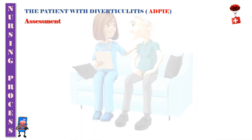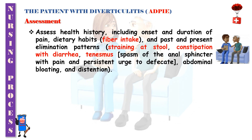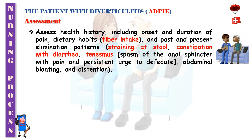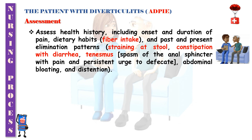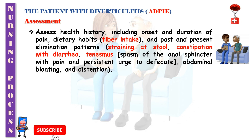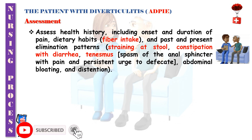The patient with diverticulitis — Assessment: Assess health history including onset and duration of pain, dietary habits like fiber intake, and past and present elimination patterns such as straining at stool, constipation with diarrhea, tenesmus, and persistent urge to defecate, abdominal bloating and distension. Tenesmus is described as the spasm of the anal sphincter with pain.